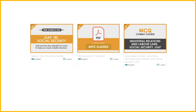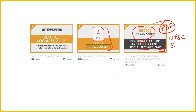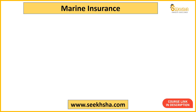Before going into that, this is an MCQ Combo course — you already know it. The MCQ Combo course includes industrial relations, labour law, social security, and related MCQs. You get all MCQs as well as PDFs included, just like any other lectures on YouTube. If you take the MCQ Combo course, you don't need to take a PDF separately. Use the code UPSC EPFO, which will give you 50% off. I want everyone to take this particular MCQ Combo course.